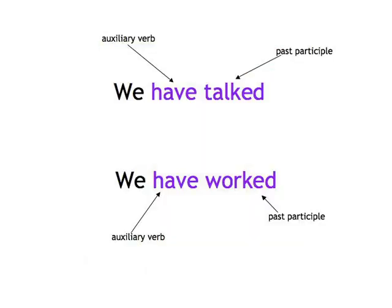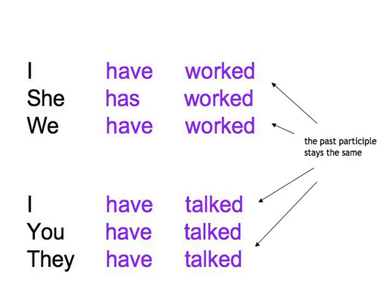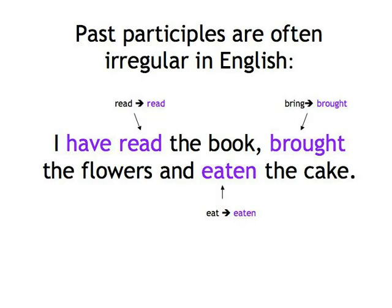Let's start by looking at the similarities between German and English. We have talked about the present tense; we have worked hard on the cases. So now let's have a look at the perfect tense. 'We have talked' and 'we have worked' are both examples of the perfect tense in English. We use 'have' or 'has' and the past participle of the verb. The past participle stays the same in all singular and plural forms, but there are quite a lot of irregular past participles that have to be learned.